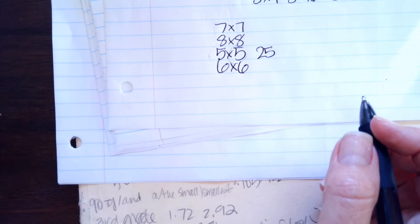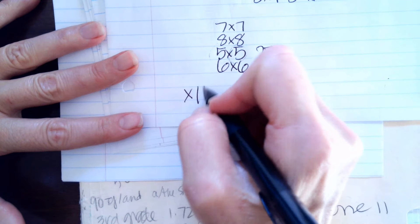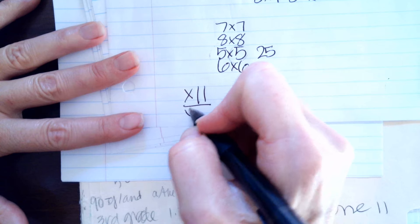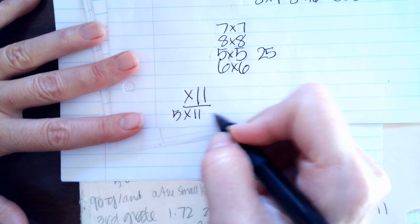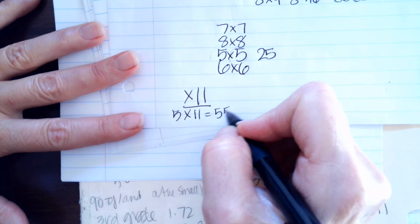So that is the first part. And then times 11, we just double the number. So if I have 5 times 11, I'm going to write the 5 two times. It's 55.